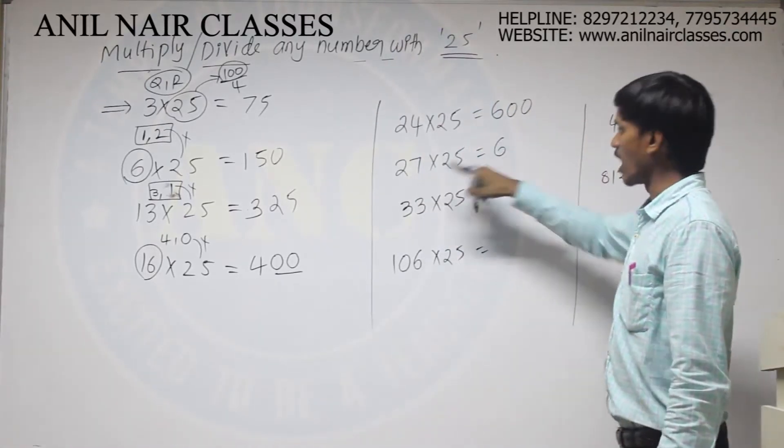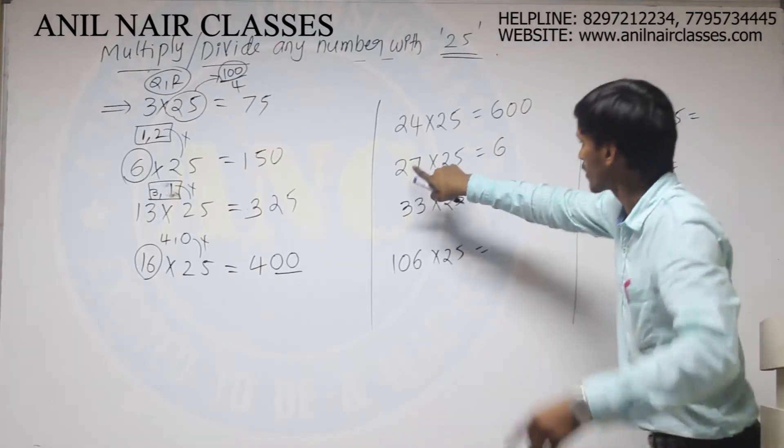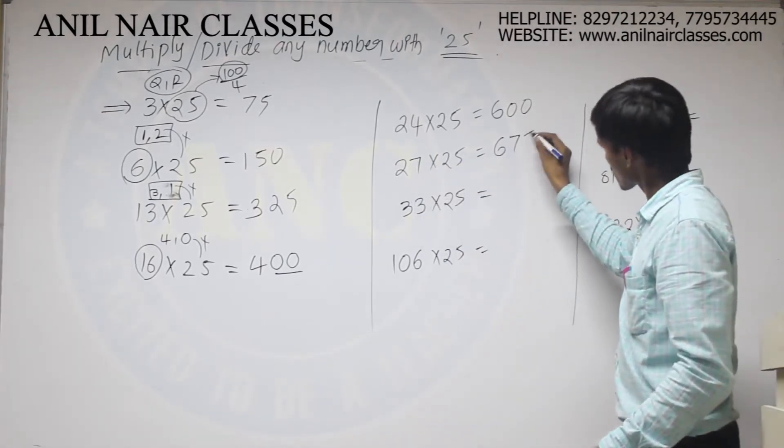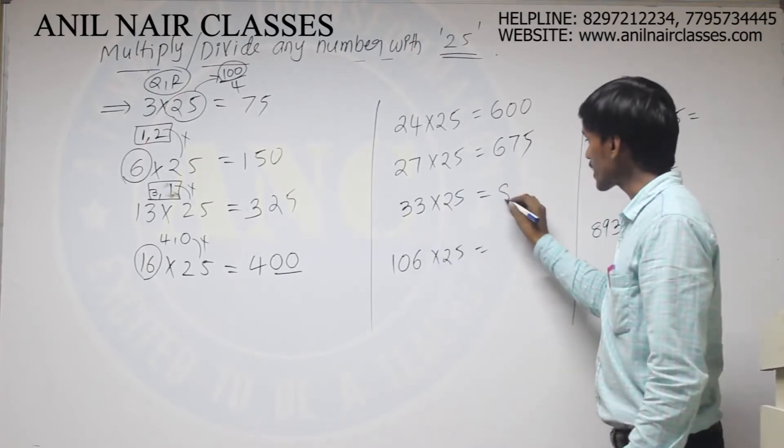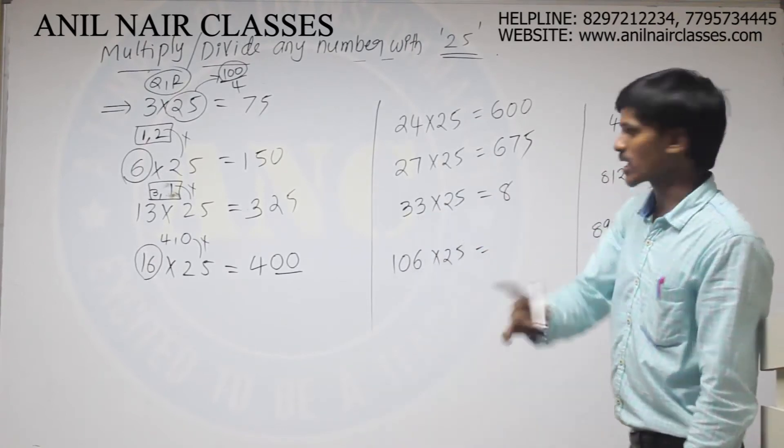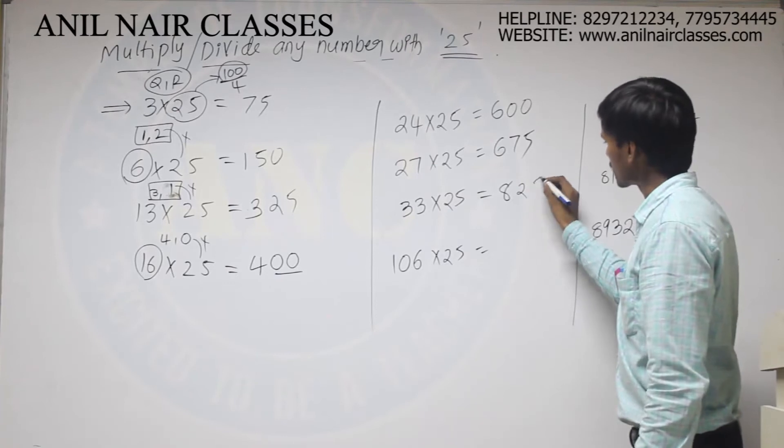Now, 27 is there. 4×6 are 24. 3 will be the remainder. 3 into 25, 675. Divide 34 with 4. 4×8 are 32. 1 will be the remainder. 1 into 25, 825.